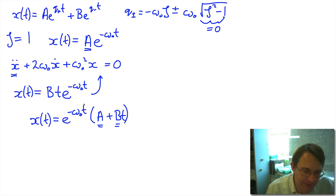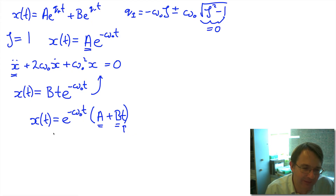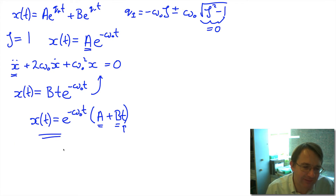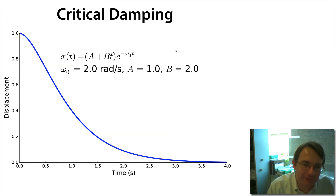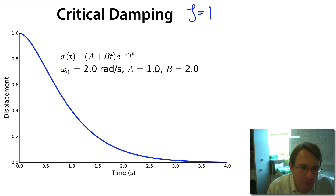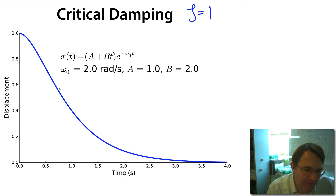We're going to end up with an exponential decay, but with this additional t term. The result is that in this particular case we get x going to zero in the fastest possible time — the object returns to the equilibrium position and remains there in the fastest possible time. We call this type of damping critical damping. Looking at the plot for particular values of omega-naught, a and b, with zeta equal to one, you can see this exponential decay back to the origin. Because of the extra t function, it goes level as you approach t equals zero.